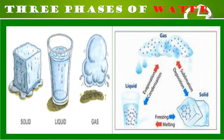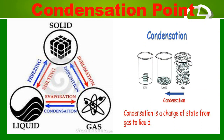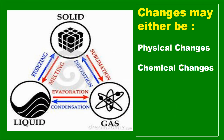That is why water exists in three phases depending on the temperature conditions to which it is exposed: solid, liquid, and gas. If the change is from gas to liquid as the temperature falls, it is called the condensation point. The state of substances in solid, liquid, or gas phases is largely determined by temperature. At each threshold level of temperature, the material will change its state.